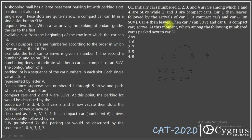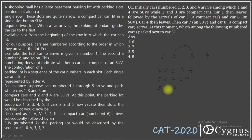Followed by the arrivals of car 5, a compact car, and car 6, an SUV. So which place will the SUV occupy? It cannot park in the single vacant slot, so car 6 parks in the next available position.